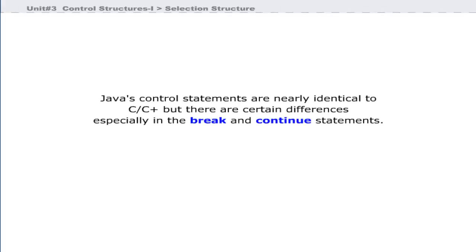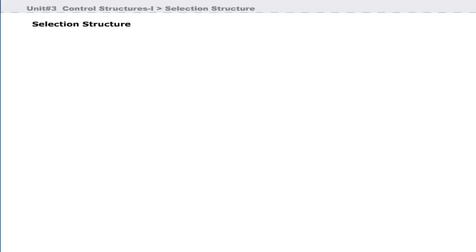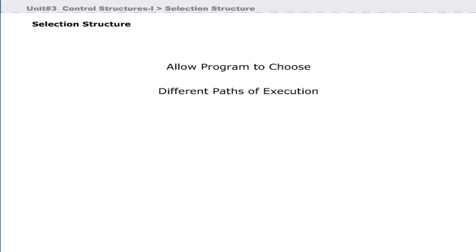Java's control statements are nearly identical to C and C++, but there are certain differences, especially in the break and continue statements. Selection control statements allow the program to choose different parts of execution based on an expression or a Boolean variable. There are two selection statements in Java: if and switch. These statements allow you to control the flow of your program's execution based on conditions known only during runtime.